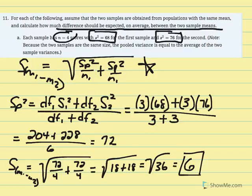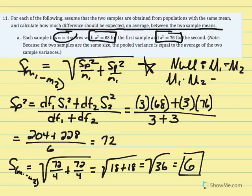What we just solved: if the null is true (mu1 equals mu2, or mu1 minus mu2 equals zero), the expected or average difference between the two sample means is 6 points. This gives us a sense that samples won't always equal the population exactly due to sampling error — and if the null is true, the average difference we'd anticipate is 6 points.